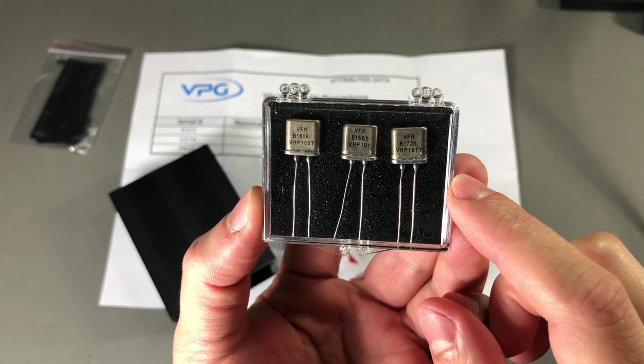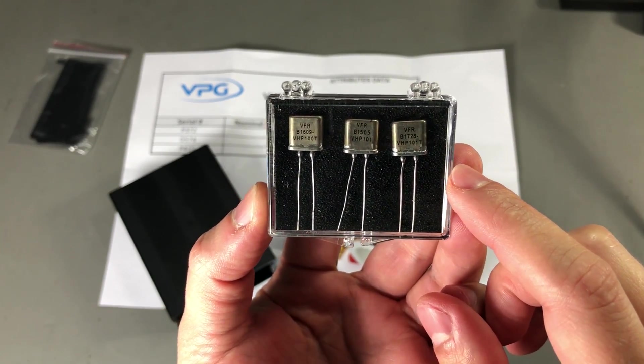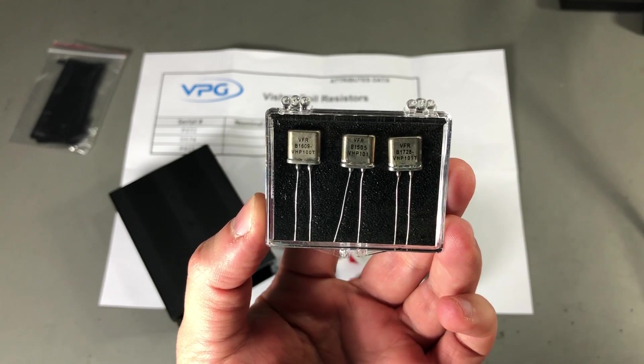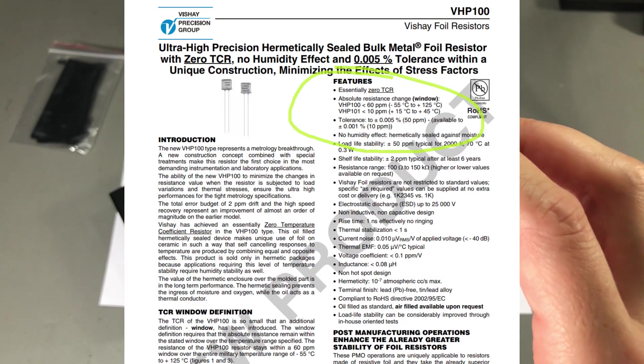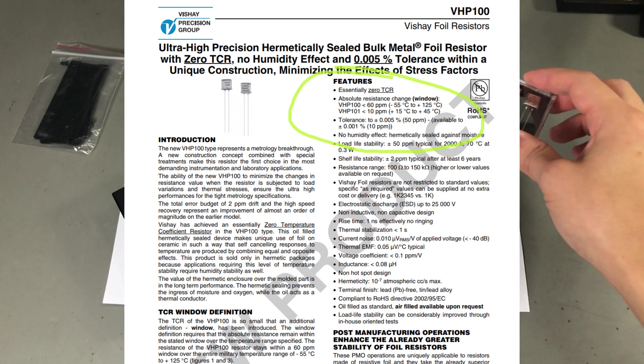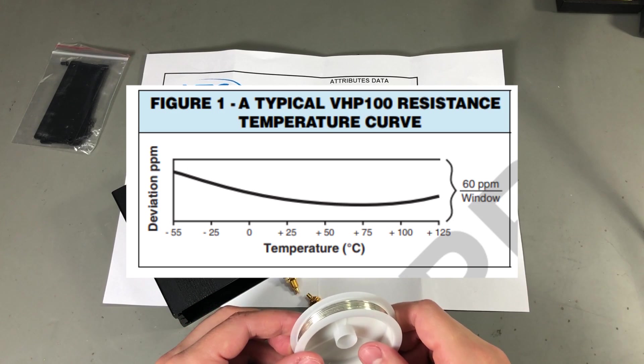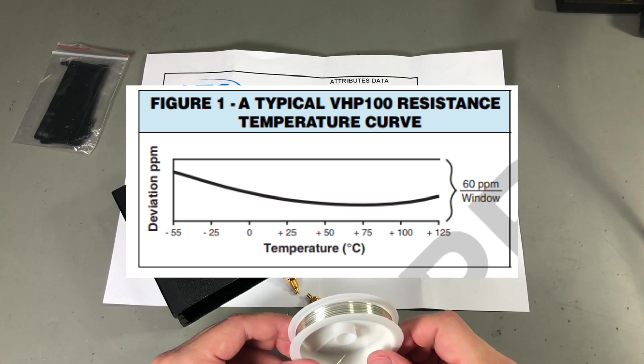These are from their VHP100 series and they are the duck's guts when it comes to precision resistors. They have incredible stability across the entire range of minus 55 up to plus 125 degrees Celsius. They will vary less than 60 ppm.